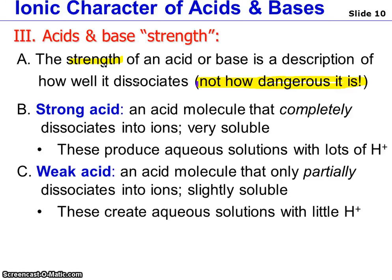So if you were to look at a strong acid or a strong base, this is a molecule that will completely dissociate into ions. The meaning of strong is that it is going to make a solution that has a large concentration of ions, so it is very soluble. A strong acid is going to have a large dissociation constant, and it is going to make a lot of hydrogen ions.